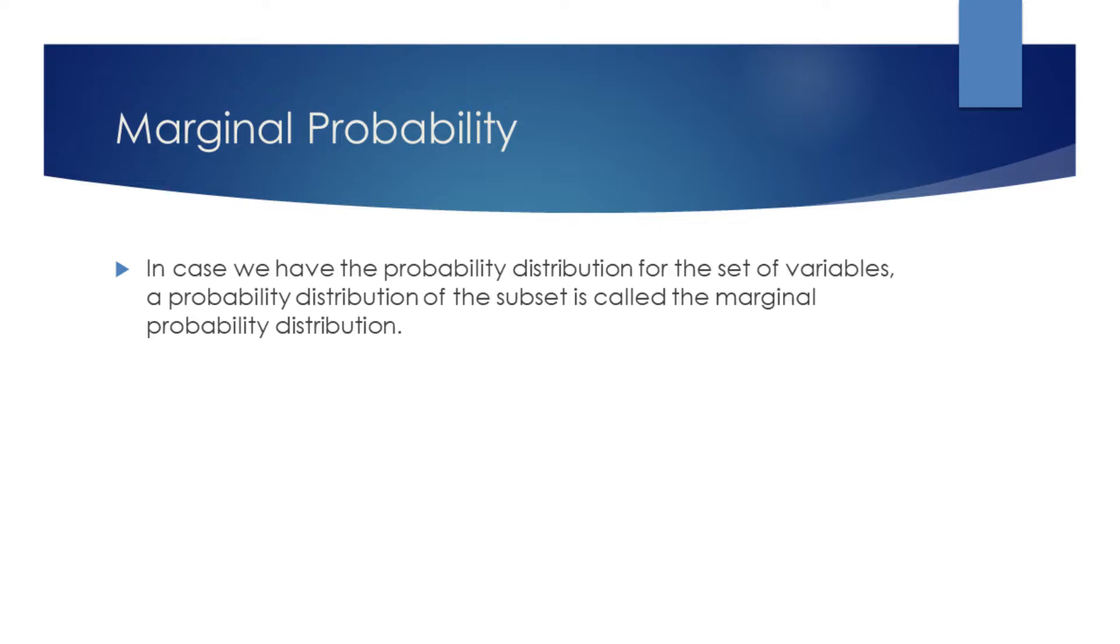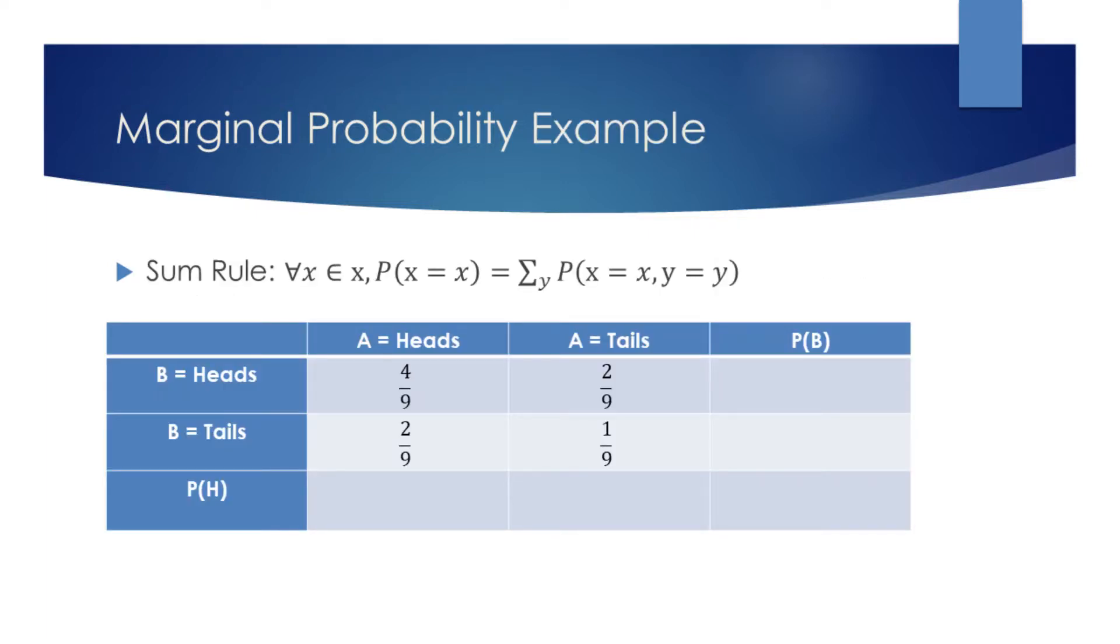We will now try to find the marginal probability distributions given the joint probability of two variables. In this table, we have a joint probability for two unfair coins to either display heads or tails.